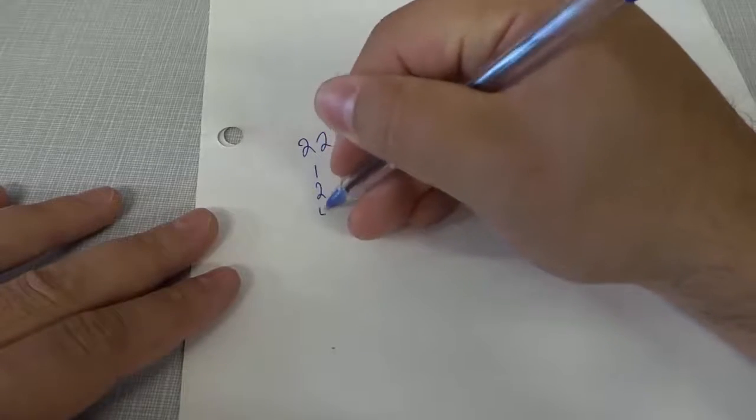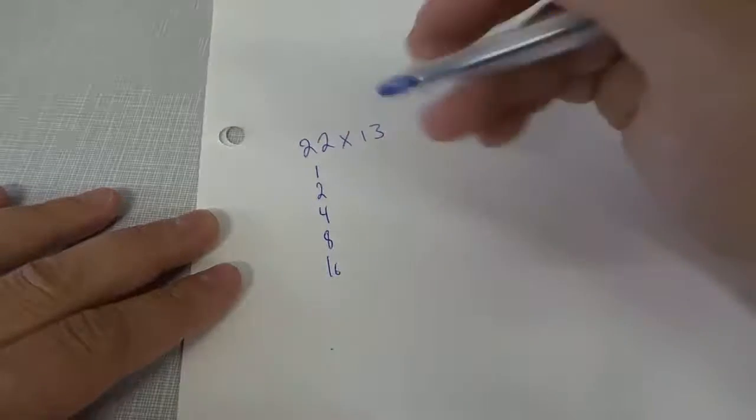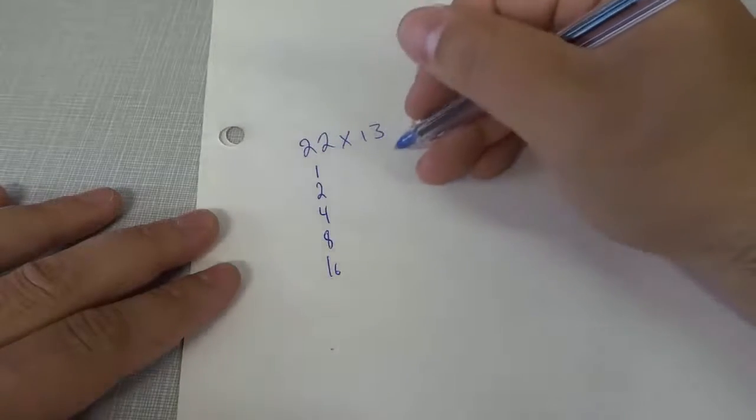One, two, four, eight, 16. The next number would take me above 22. Now we're going to double the number 13 and I'm going to try my best to do this quickly, but I'm doing it off the top of my head.